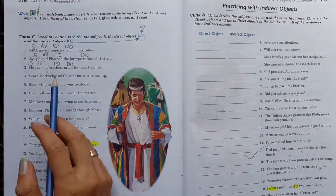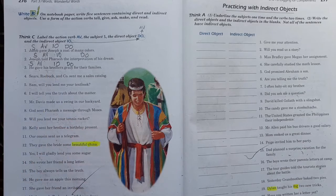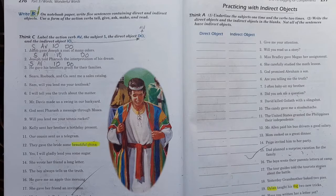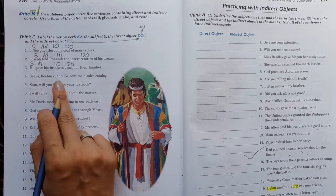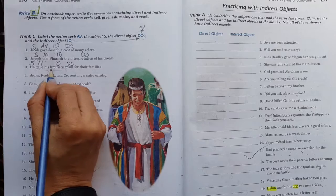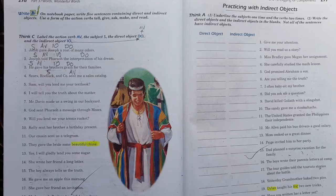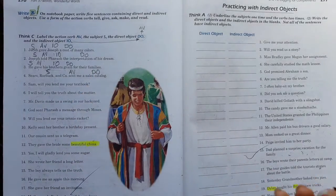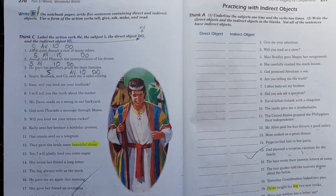Número tres. He gave his brothers grain for their families. Él le dio a sus hermanos granos para sus familias. Entonces, empezamos de esta manera. ¿Quién hizo la acción? El sujeto. De... ¿Cuál es la acción? Él dio. Cuando tú das, estás dando algo. ¿Qué estás dando? Granos. Y ahí podemos encontrar el objeto indirecto. ¿A quién le dio esos granos? A sus hermanos.